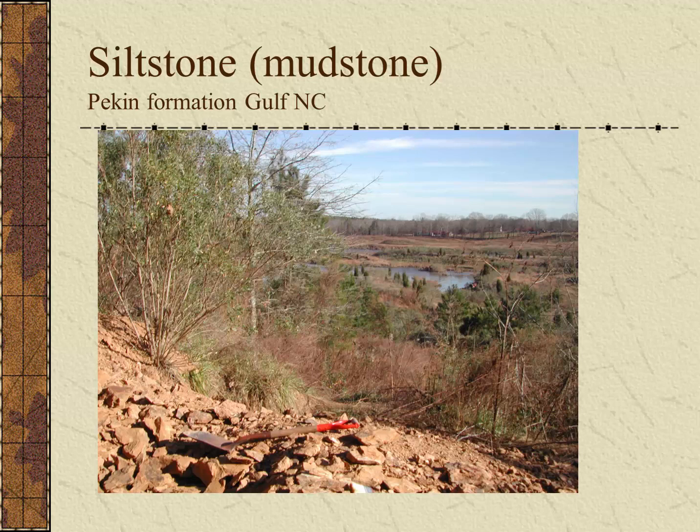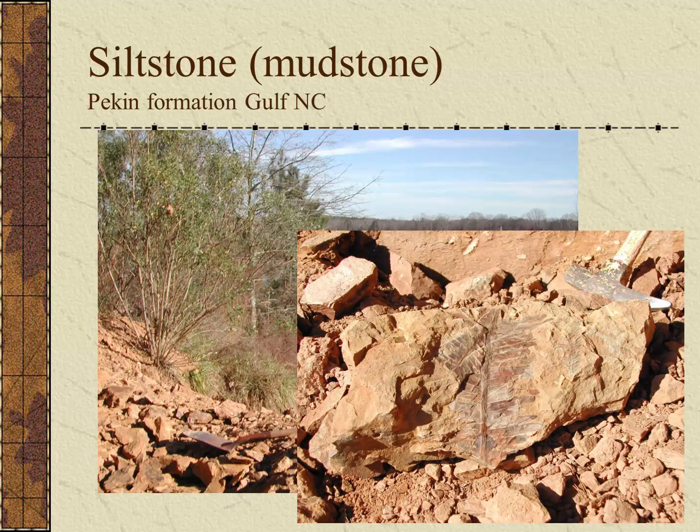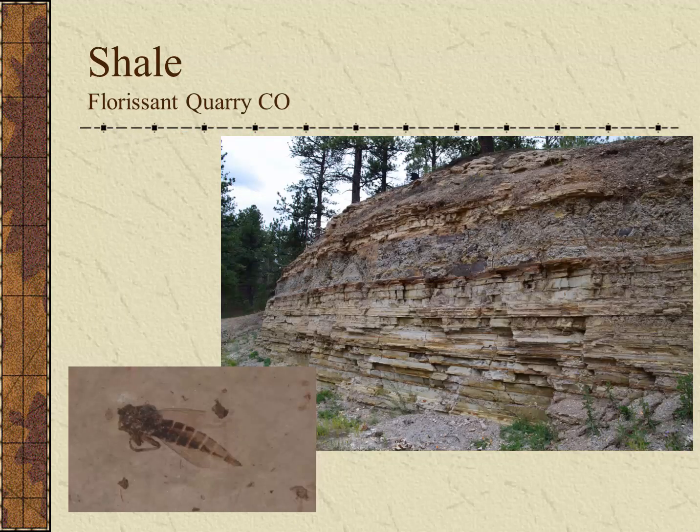Finer than sandstones, we'll find the siltstones or mudstones. Here's an example of mudstones from the Pekin Formation near Gulf, North Carolina. This particular rock unit preserves numerous cycad and fern fossils from the Triassic period, approximately 200 million years ago. The finest particle size sediment is clay, which forms shale, such as these thinly bedded shales in the Florissant Quarry in Colorado. The very fine particle size often results in exquisite preservation — in this case, a robber fly insect is well-preserved in the fine shales.